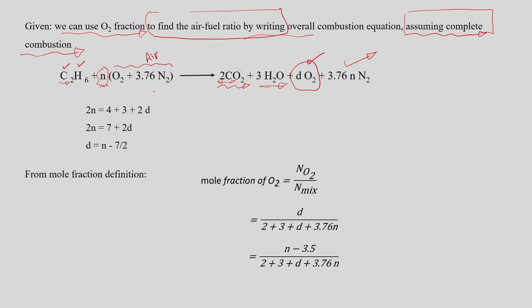Now we balance oxygen. On the reactant side we have 2N oxygen atoms. On the product side: 2×2 = 4 (from CO2) plus 3 (from H2O) plus 2D (from excess O2). Setting 2N = 4 + 3 + 2D and solving gives D = N − 7/2, or D = N − 3.5. This is the moles of oxygen coming out in the product gas.